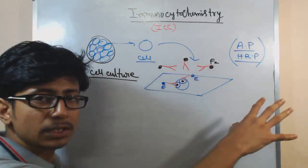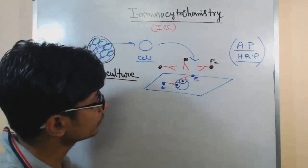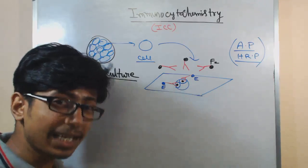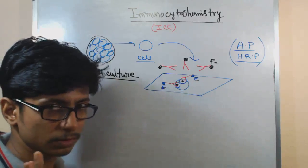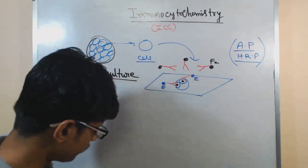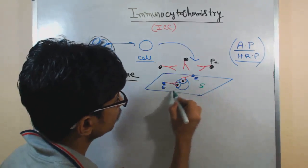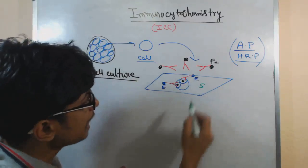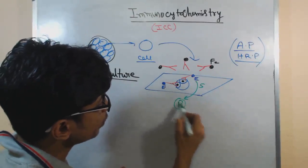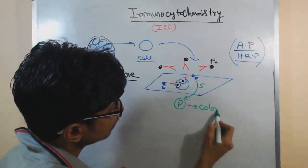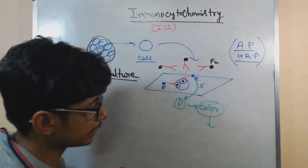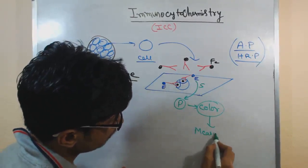Then we add the substrate for the enzyme and the enzyme will convert the substrate into product which gives us color and we can measure the color at a particular wavelength.